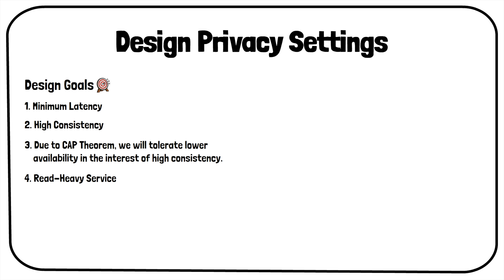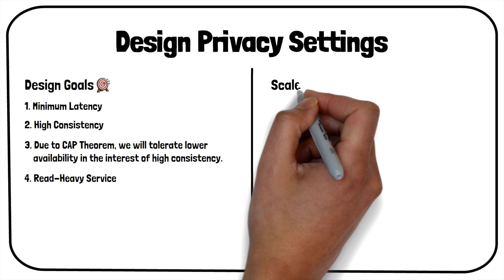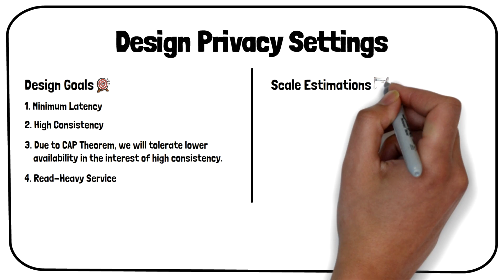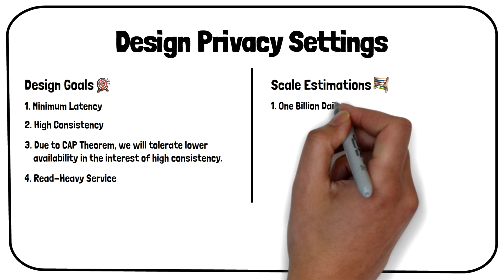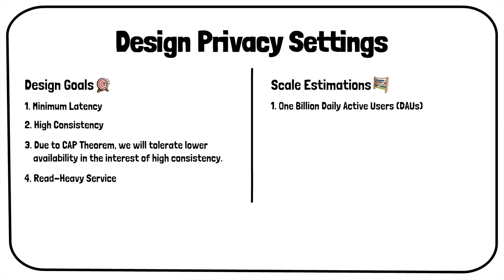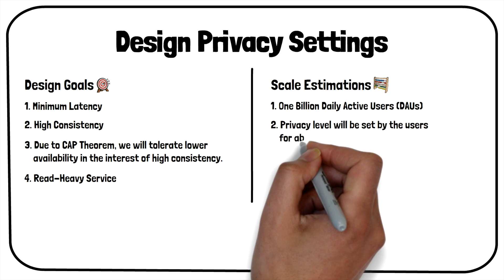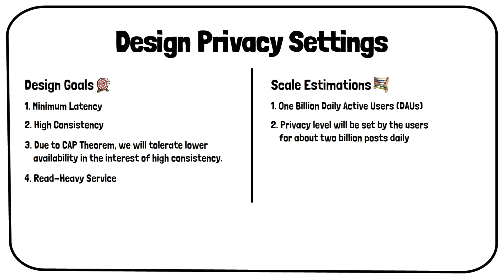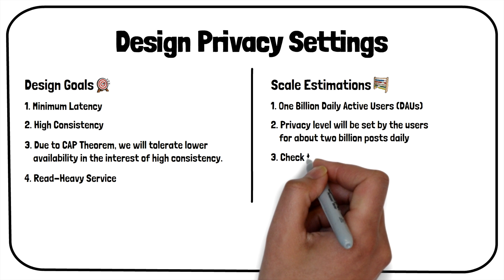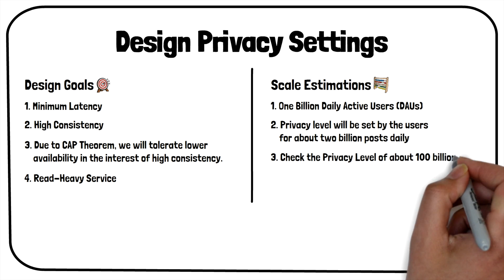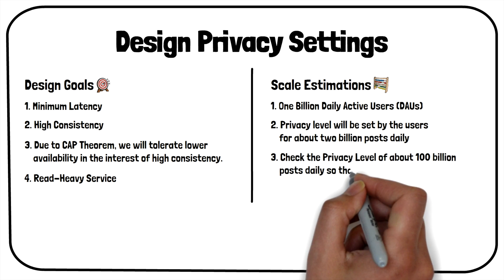Our system will also be read-heavy in nature. We will need to make a large number of read requests to check the privacy level of existing and new posts, but far fewer write requests to set the privacy level. The system will have 1 billion daily active users, privacy levels set for about 2 billion posts daily, and checks on about 100 billion posts daily.